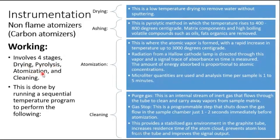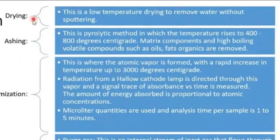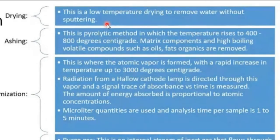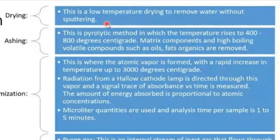This is done by running a sequential temperature program. Step one — drying: this is low-temperature drying to remove water or solvent without sputtering. Sputtering is what happens when you heat a pan and add a drop of water — the drop starts dancing and small droplets sputter around. That sizzling action is called sputtering.